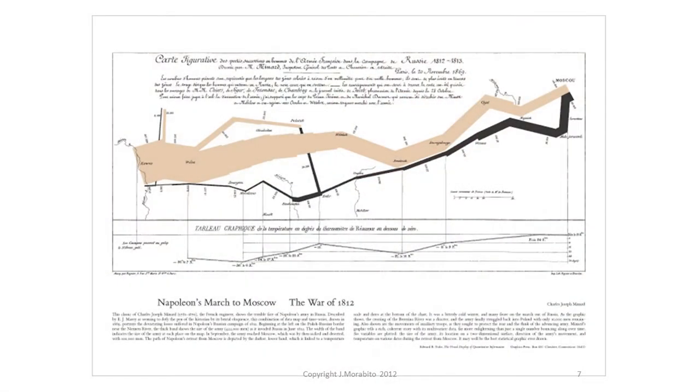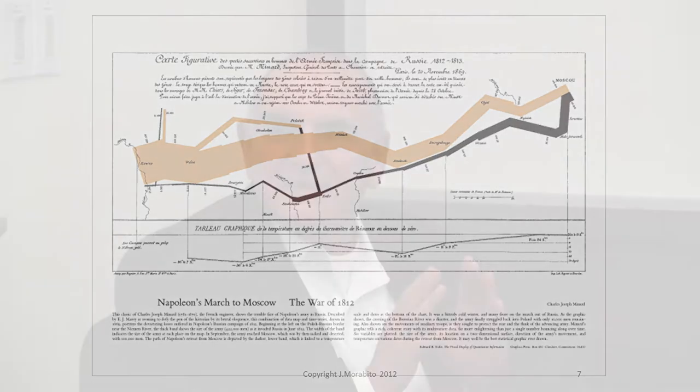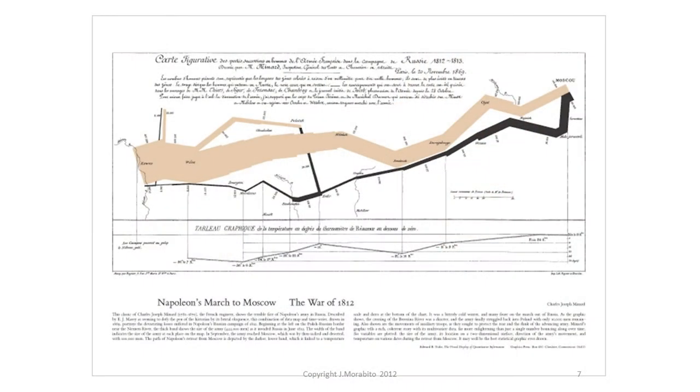The width of the band indicates the size of the army. As the army moves into Russia — with some branches — you notice the band gets more and more narrow. The visualization tells us a lot just by looking at it. The dark line shows the retreat, and the line keeps getting more and more narrow — so finally at the end, there's almost no one left. We can also map it to the temperature. There's a lot of information here, and it actually looks nice while helping to explain exactly what is going on.